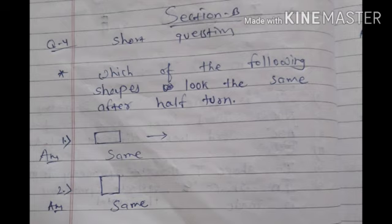First one is a rectangle. If we set half turn, it will be the same. Second one is square. If we set half turn, it will be the same.